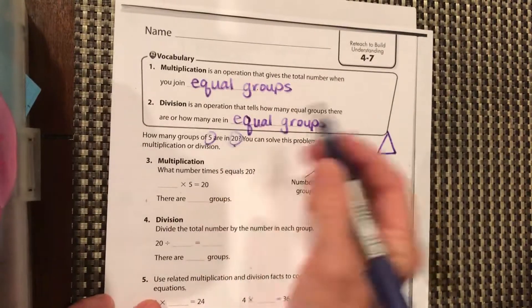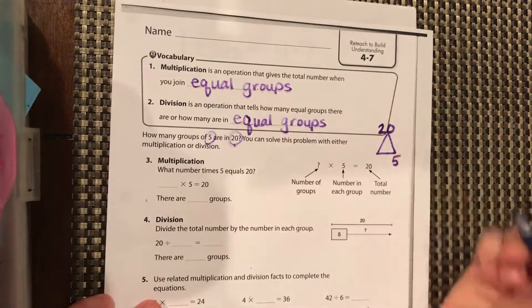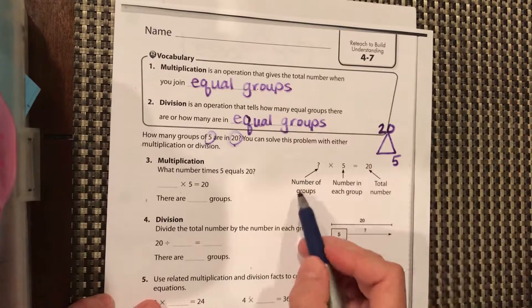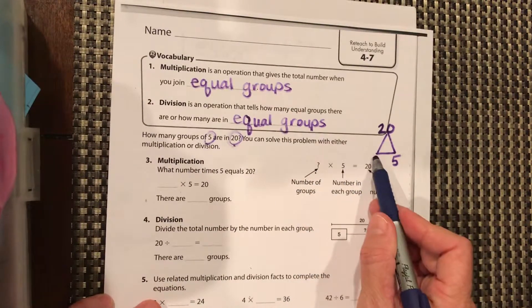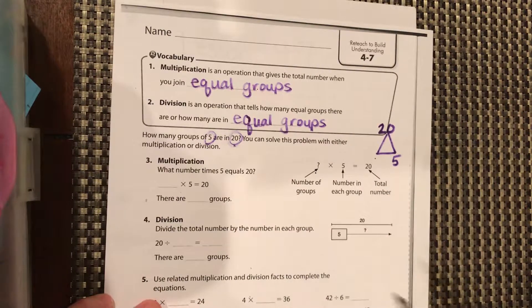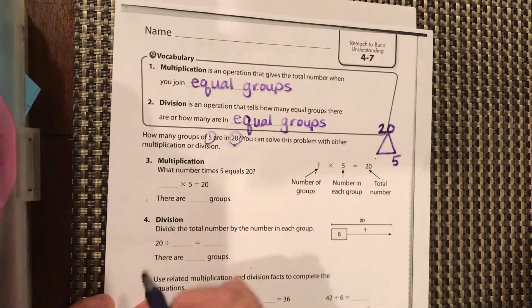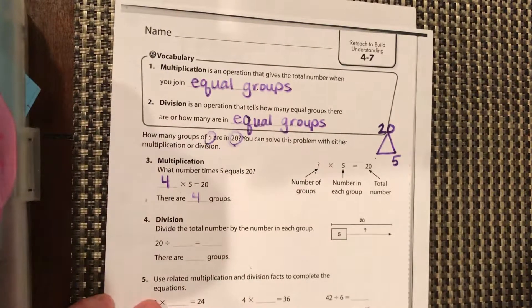So 20 is our total that we're starting with. We are going to have five in each group and we want to know what is the number of groups. Number of groups times five in each group is going to equal total number of 20.